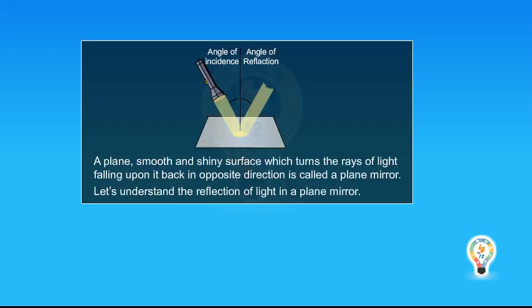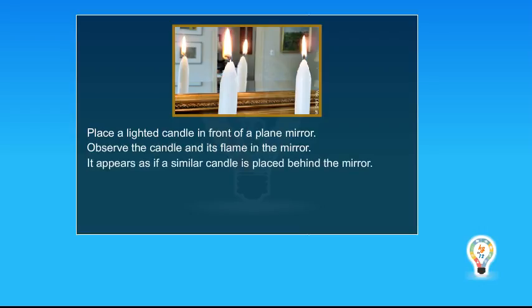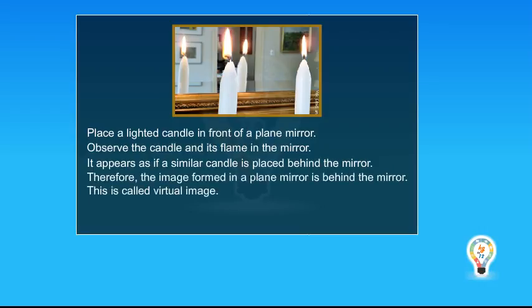Let's understand the reflection of light in a plane mirror. Place a lighted candle in front of a plane mirror. Observe the candle and its flame in the mirror. It appears as if a similar candle is placed behind the mirror. Therefore, the image formed in a plane mirror is behind the mirror. This is called a virtual image.